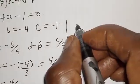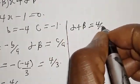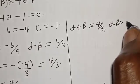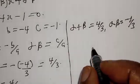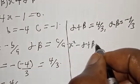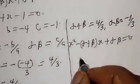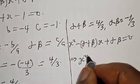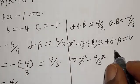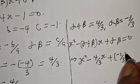Now let's confirm if our answer is right or wrong. We have alpha plus beta = 4/3 and alpha beta = -1/3. The quadratic equation in standard form is s² - (alpha + beta)s + alpha·beta = 0. Substituting, this implies we have s² - (4/3)s + (-1/3) = 0.